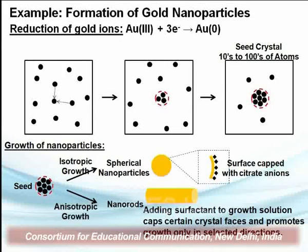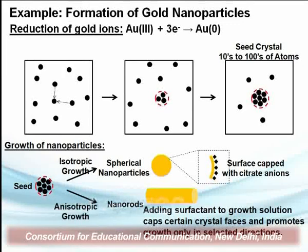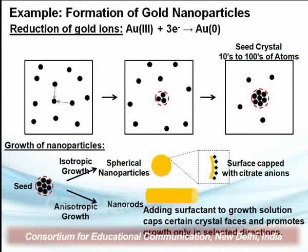In the growth diagram, the particles are initially separated, then they form clusters, and this cluster becomes the seed. The seed is used to grow nanoparticles of different sizes — tens to hundreds of atoms are collected to form nanoparticles. Isotropic growth leads to spherical nanoparticles capped with citrate ions. In anisotropic growth, nanorods are formed. Adding surfactant to the growth solution caps certain crystal faces and promotes growth in selected directions, allowing control over the size and shape of nanoparticles produced.